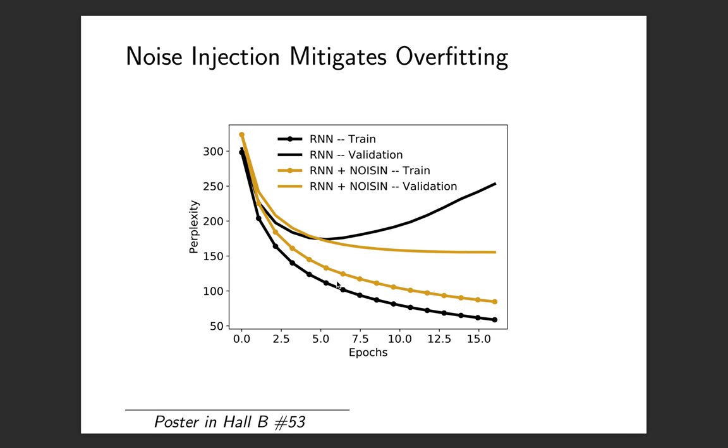What we notice is that for the deterministic RNN, the training perplexity keeps going down, so the RNN is still learning. But the performance on the validation set starts going up after only five iterations over the data, after only five epochs. That's a sign of overfitting. This is not the case for the noise injected RNN shown in the yellow curve, whose performance keeps improving across iterations.